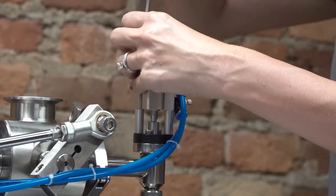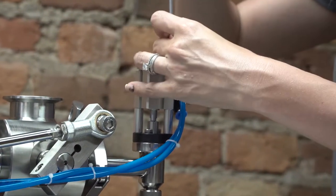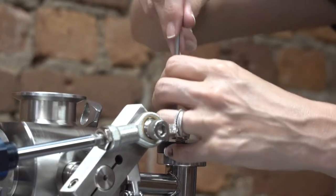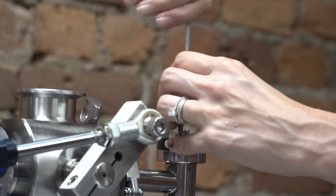Use the 4mm hex key to remove the nozzle air cylinder bolts. You'll also use the 4mm hex key to remove the bolts holding the black nozzle cap.